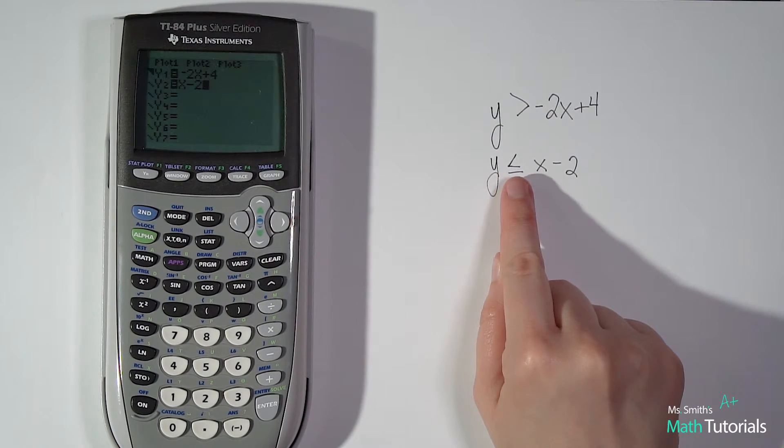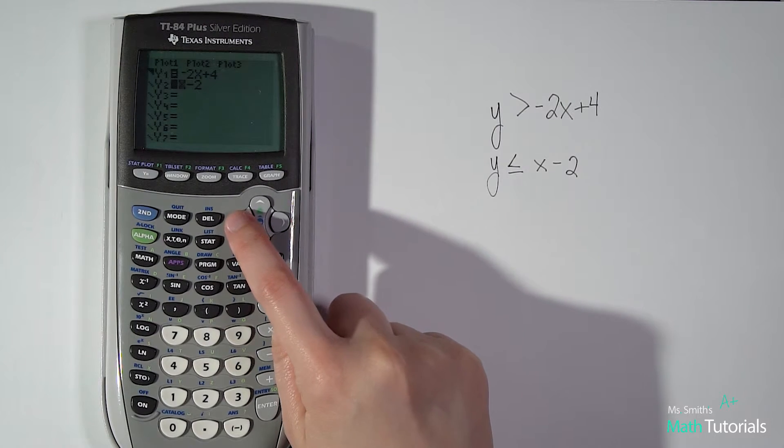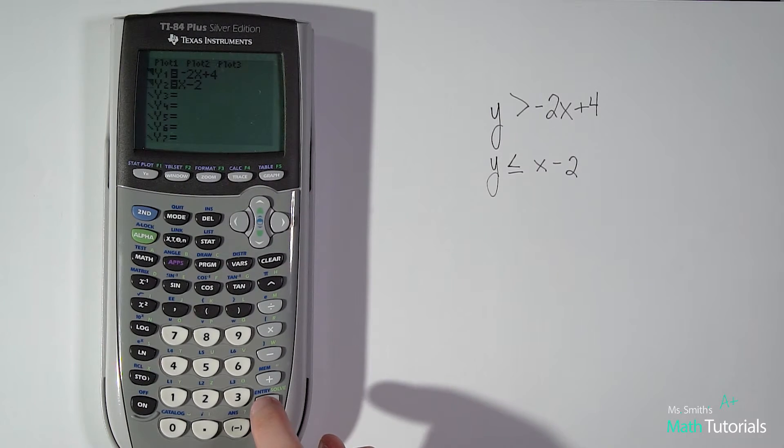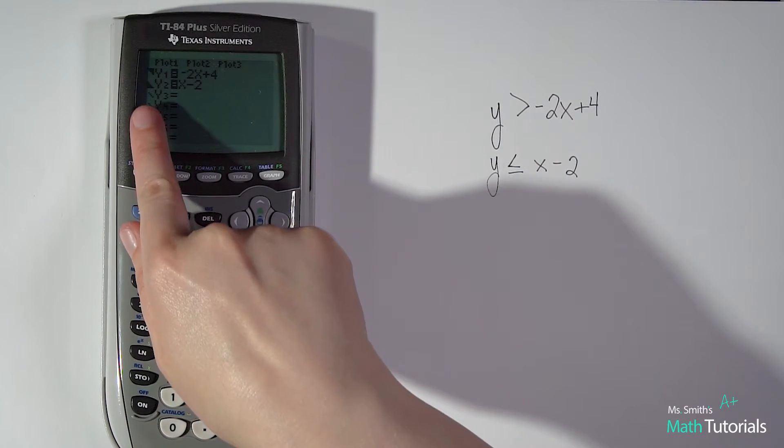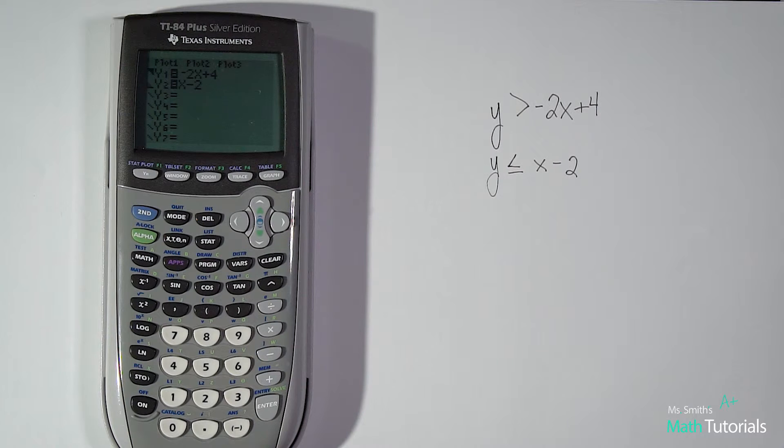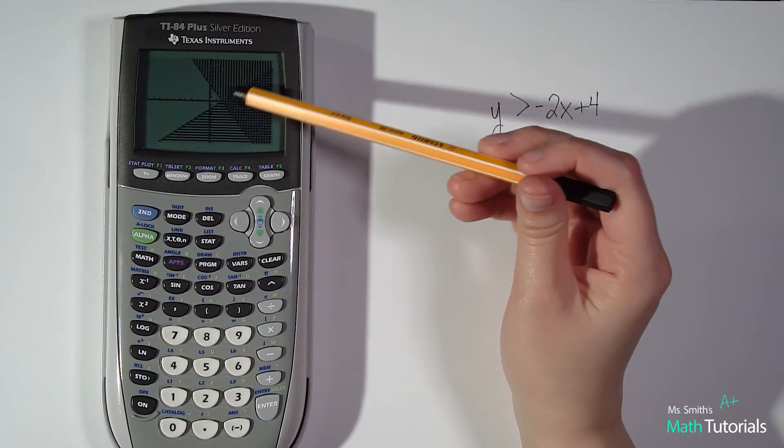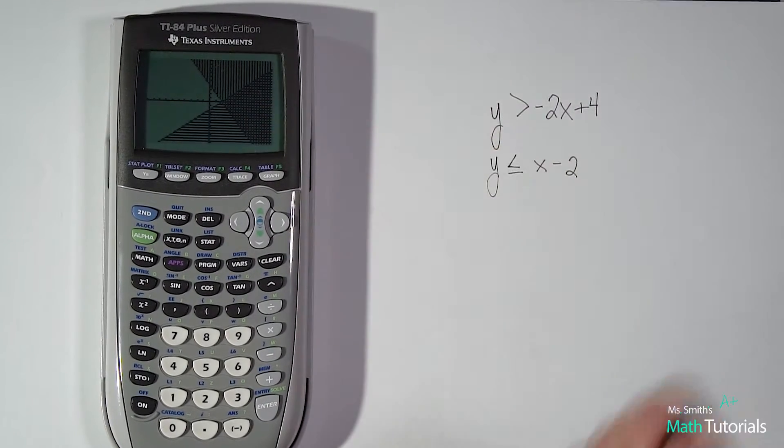And this is y is less than or equal to. So I need to come over here and now click enter. There's my greater than. And I go one more and that's my less than. So now it's a blinking triangle in the bottom left corner. That's your less than symbol. So now I've got both my equations set up. Let's graph it to see how this would look.